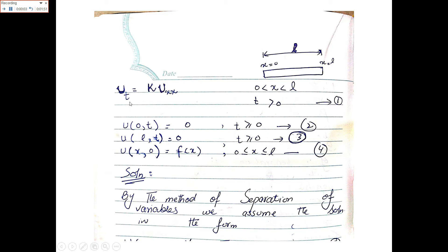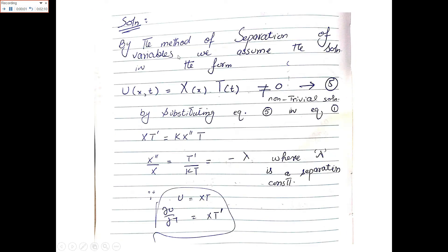The given equation is u_t = k·u_xx, where x goes from 0 to l. These two are the boundary conditions and this is the initial condition. The method of separation of variables assumes that u(x,t) = X(x)·T(t), not equal to zero — this is the principle of superposition applied to separate the variables.